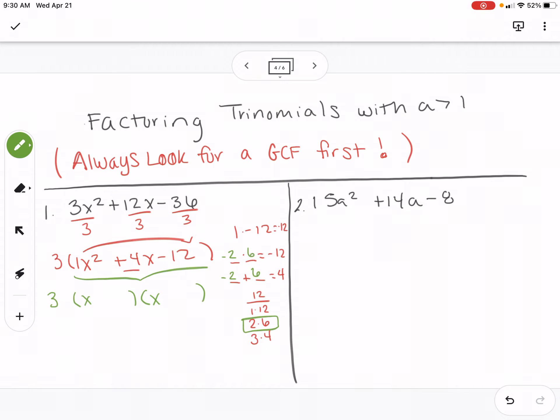x times x is x squared. And now I can put my minus 2 and my positive 6. So these are the three factors for our expression.